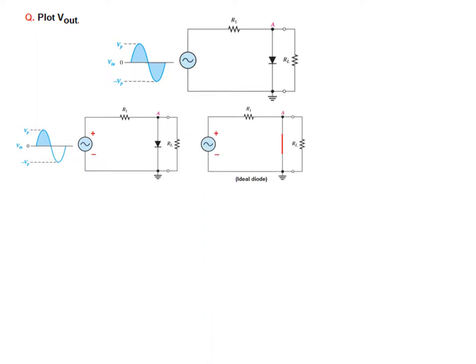So for forward bias in case of ideal diode, we represent by a short circuit. The voltage across this will be 0 volt because there is no voltage drop across this short circuit.